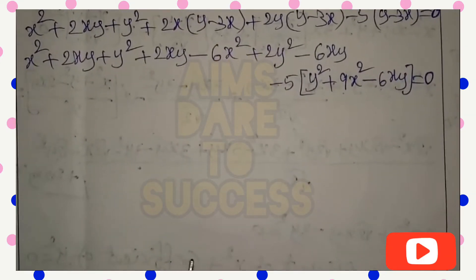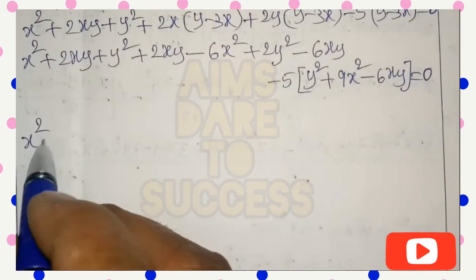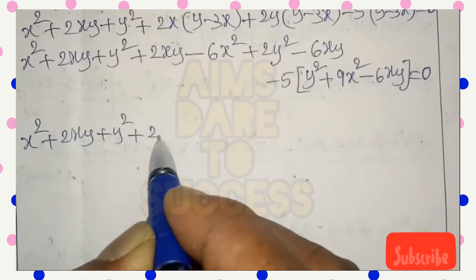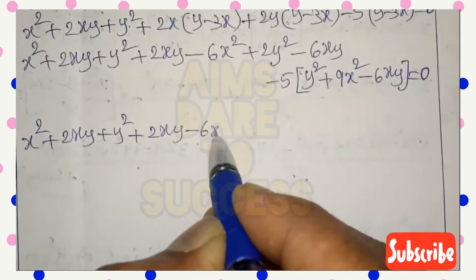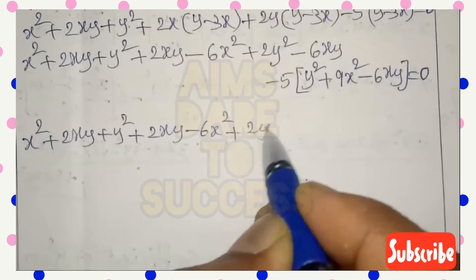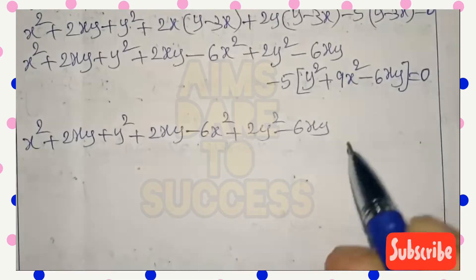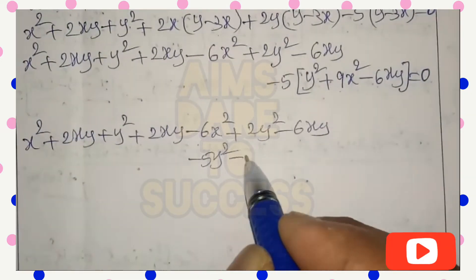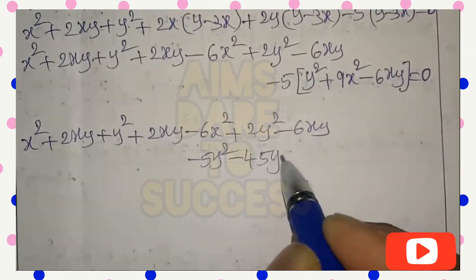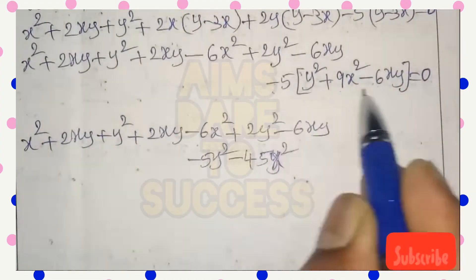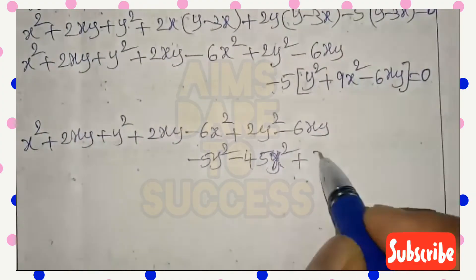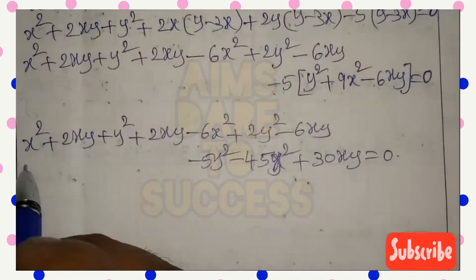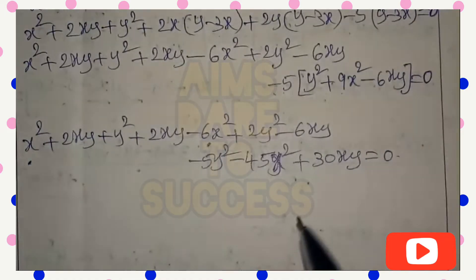Writing all terms: x² + 2xy + y² + 2xy - 6x² + 2y² - 6xy - 5y² - 45x² + 30xy = 0. Now taking x² terms together: x² - 6x² - 45x²; xy terms: 2xy + 2xy - 6xy + 30xy; and y² terms: y² + 2y² - 5y².